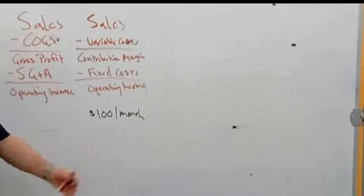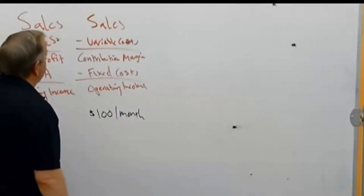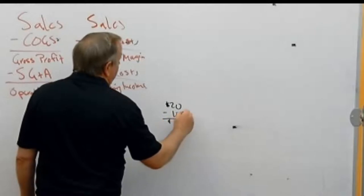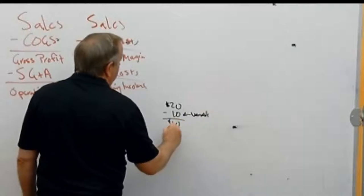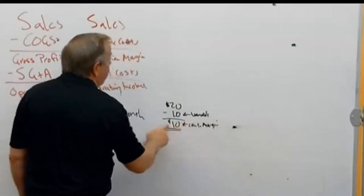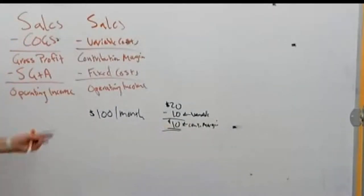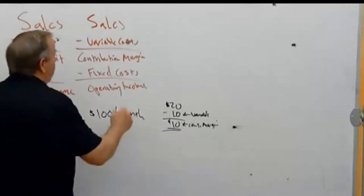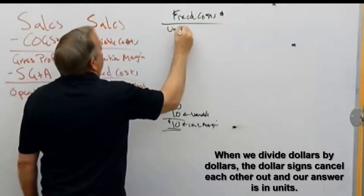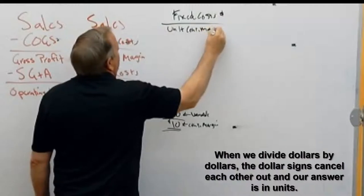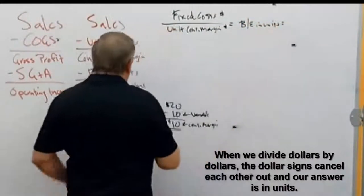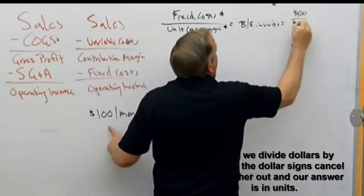If every bottle of wine sells for $20 and costs $10, that $10 is a variable cost, giving us $10 of unit contribution margin. To find break-even in units, take fixed costs — expressed in dollars — and divide by unit contribution margin. In this example: $100 fixed costs divided by $10 unit contribution margin means we have to sell 10 bottles to break even.